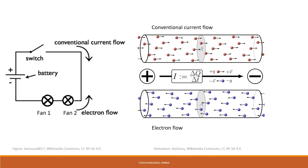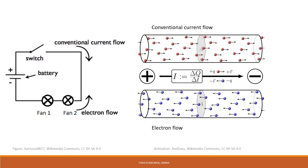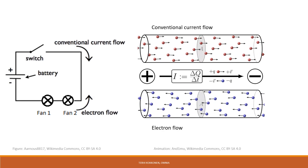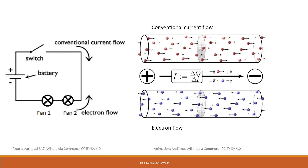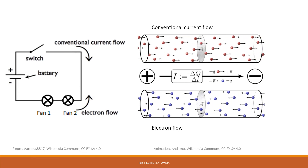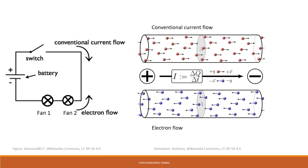Conventional current flow exists for historical reasons. Electricity was discovered before electrons were discovered, and it was known which way they move in a circuit.